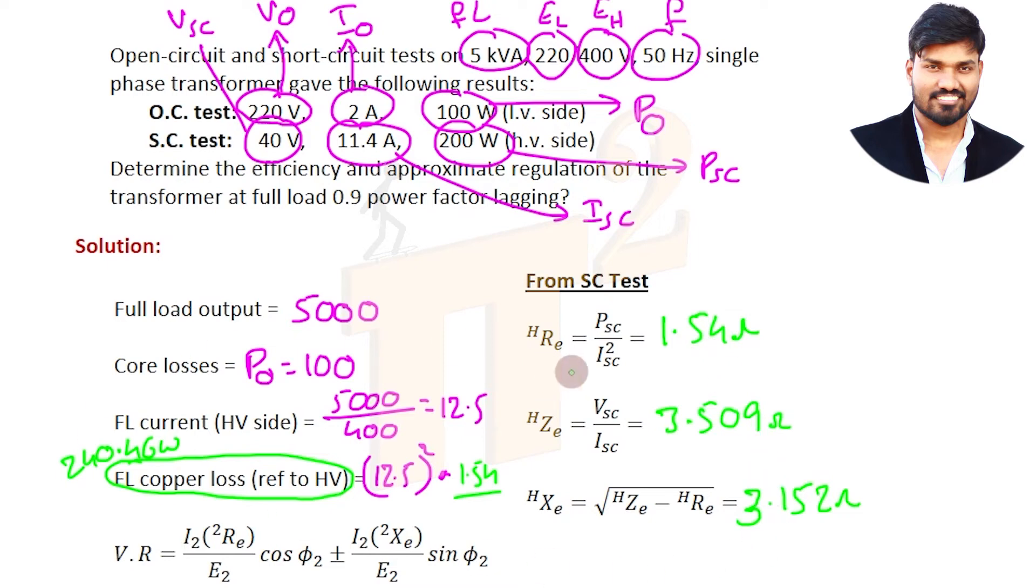We are asked to find efficiency and voltage regulation. Voltage regulation formula: I_2 value is known which is 12.5. R_E2 value referred to high voltage side, because everything else is in terms of high voltage side. This is high voltage current, high voltage value of voltage and load side power factor.